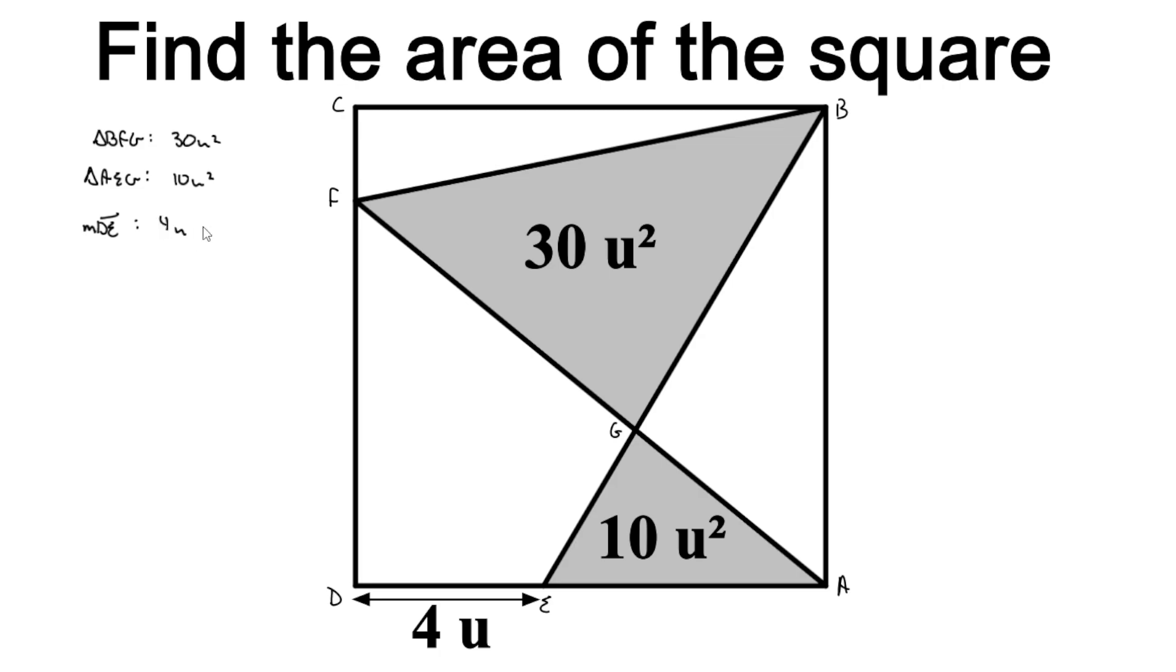Now, since we want to find the area of the square, if we were able to find its side length, then all we need to do is square that number and we have the area of our square. So we'll denote S to be the side length of our square.